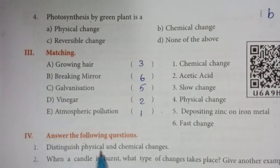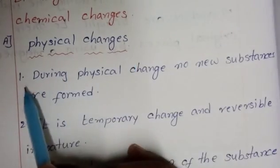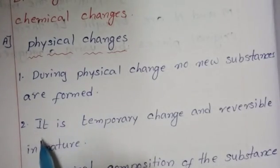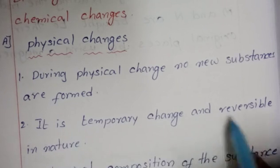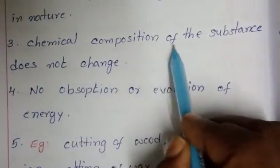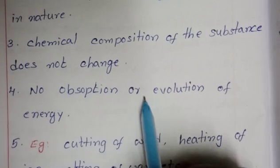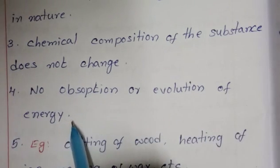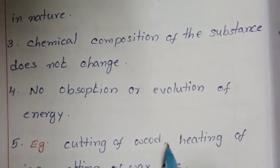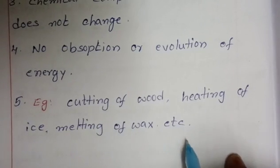Distinguish physical and chemical changes. Physical changes: during a physical change, no new substances are formed. It is a temporary and reversible change in nature. Chemical composition of the substance does not change. There is no absorption or evolution of energy. Examples: cutting of wood, heating, melting of wax, etc.